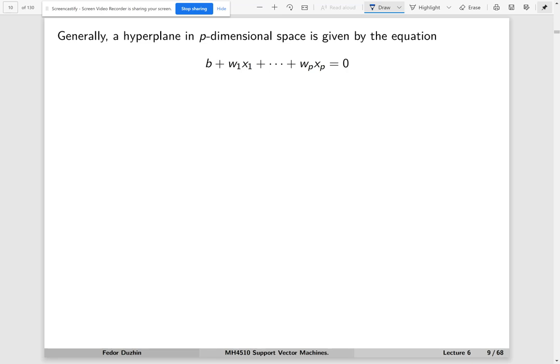A hyperplane in a p-dimensional space is given by a linear equation. Now, if p equals two, then our hyperplane is just a line.